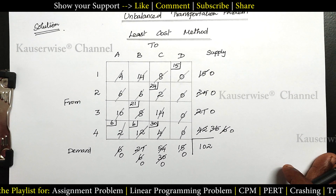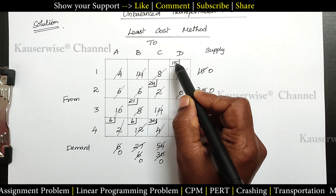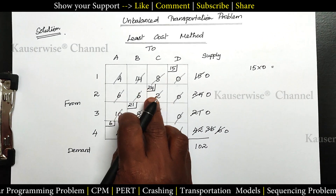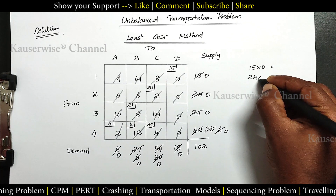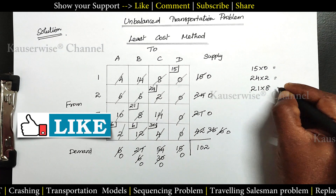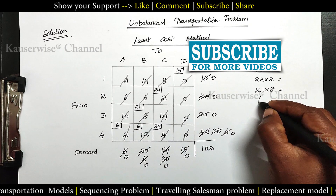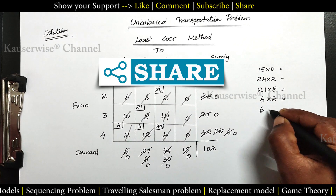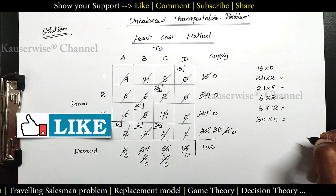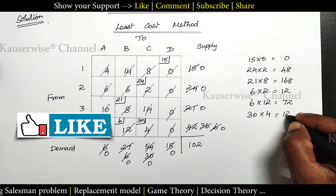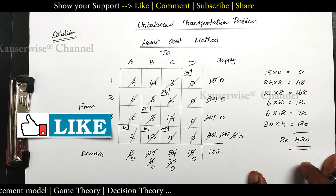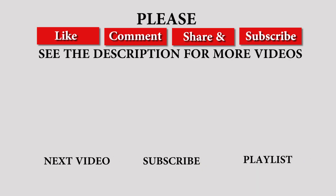Now we can find out the total transportation cost by multiplying the cost by the allocated value. First: 15 into 0. Second row: 24 into 2. Third row: 21 into 8. Fourth row: 6 into 2. Then 6 into 12. Then 30 into 4. The total is 72 plus 120, giving a total transportation cost of 420 rupees. This is the way to calculate total transportation cost by using the least cost method.